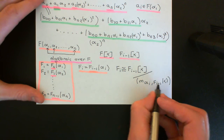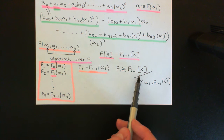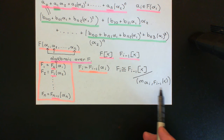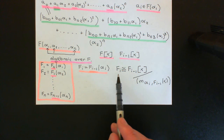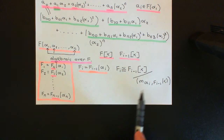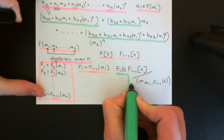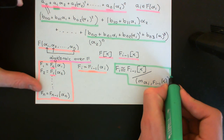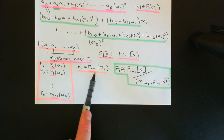The reason is that all of the polynomials in the same additive coset of the principal ideal generated by the minimal polynomial of αᵢ over Fᵢ₋₁ are going to evaluate at αᵢ to give the exact same element of L. All the elements in the principal ideal are just multiples of the minimal polynomial, so they all evaluate at αᵢ to give 0. That's a hint as to why these two are isomorphic — there's a beautiful bijective correspondence. If you aren't familiar with that, do watch my video on field extensions and the video on algebraic field extensions.